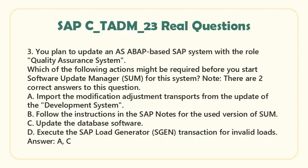Question 3. You plan to update an ABAP-based SAP system with the role Quality Assurance System. Which of the following actions might be required before you start Software Update Manager (SUM) for this system? Note: There are two correct answers. A. Import the modification adjustment transports from the update of the development system. B. Follow the instructions in the SAP Notes for the used version of SUM. C. Update the database software. D. Execute the SAP Load Generator (SGEN) transaction for invalid loads. Answer: A, C.